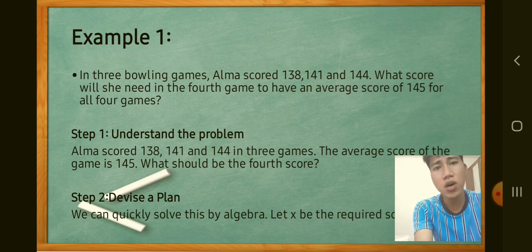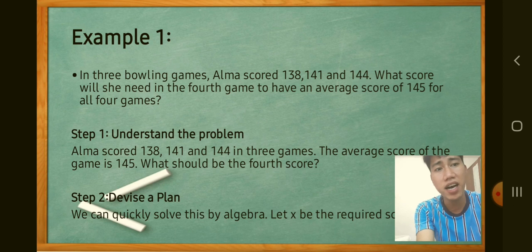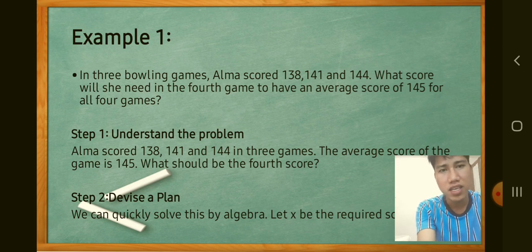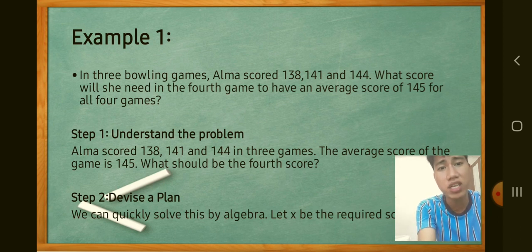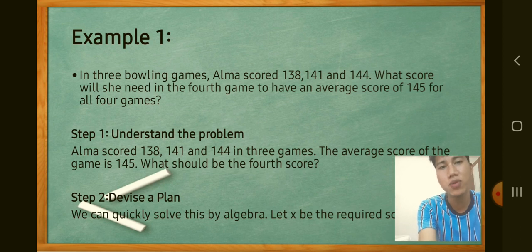Step 1 — Understand the Problem: Alma scored 138, 141, and 144 in three games. We need to find the fourth score so the average of all four games equals 145. Step 2 — Devise a Plan: We can solve this using algebra. Let x be the required fourth score, where x is a variable representing the unknown.